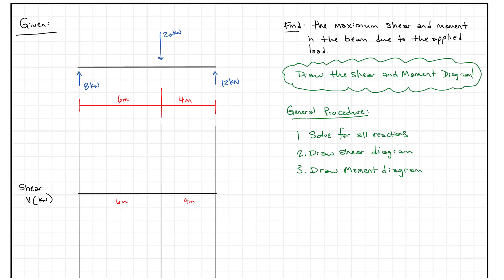Right now we're going to take a problem where we've been given certain reactions. We have 8 kilonewtons on one side and 12 kilonewtons on the other side. What we want to do is find the maximum shear and moment in this beam due to the applied load. There's also a video on solving reactions if you need it.